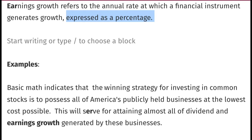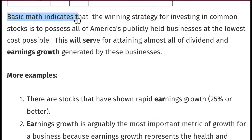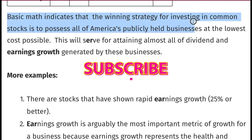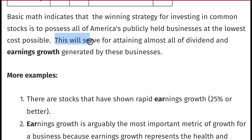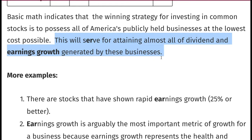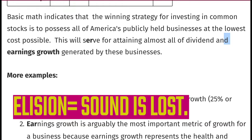Let's look at the word 'earnings growth' in example sentences. When we say 'this will serve for attaining almost all of dividend and earnings growth,' what happens to the D in 'and earnings growth'? The D is cut off. Check out the video on how to speak fluent English for more details about elision.